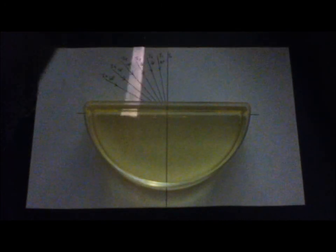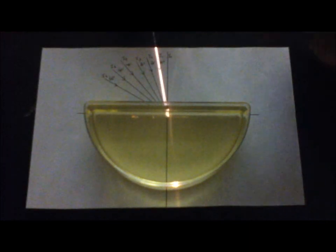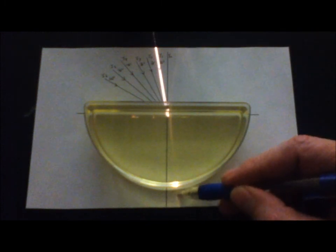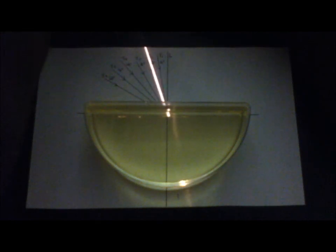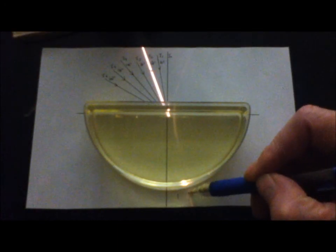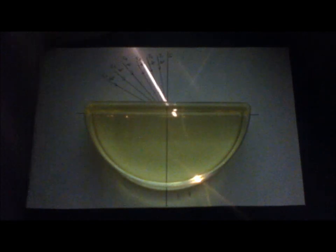Okay, so what we're going to do now is move our ray box so that we're going to shine light along each of the incident paths that we've already measured out. We've got 10 degrees incident and there is our refracted ray right there. Now we're going to go to 20 degrees and you can see some light coming out right there.